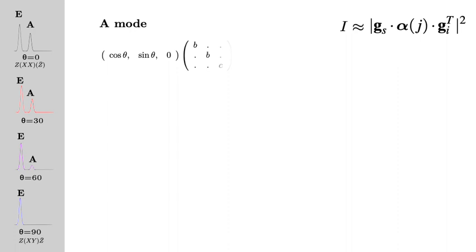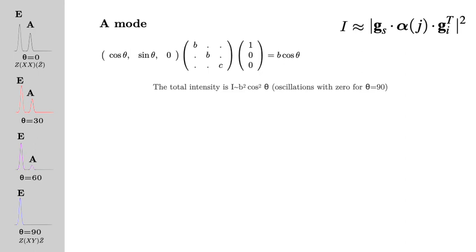So the A mode — the tensor of the A mode is a diagonal tensor. In those tensors, we usually put zeros with a dot so that it's not too heavy notation. Let's try to see how we apply the equation. So this is alpha, the tensor for the A mode. This is the incoming light polarized along x — (1,0,0) transposed. And Gs, the polarization of the scattered light, is along theta. This is a fairly easy equation to apply because of all the zeros, and we end up with B·cos(theta). So the intensity is proportional to the square of that — therefore the total intensity goes as B²·cos²(theta), which explains why A is maximum at theta equals zero and zero at theta equals 90.